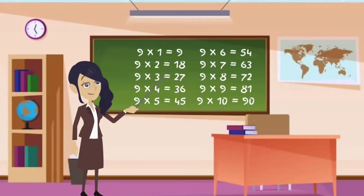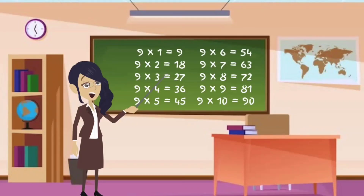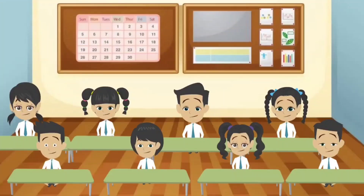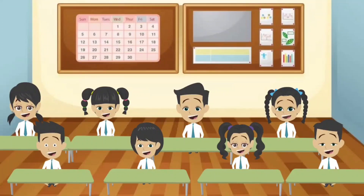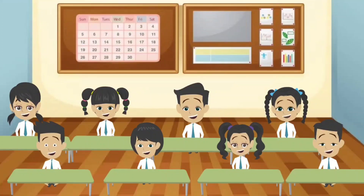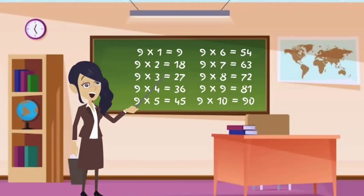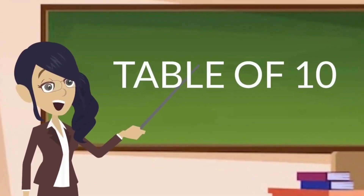Let's do this again together. 9 ones are 9. 9 twos are 18. 9 threes are 27. 9 fours are 36. 9 fives are 45. 9 sixes are 54. 9 sevens are 63. 9 eights are 72. 9 nines are 81. 9 tens are 90.